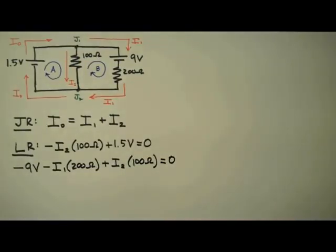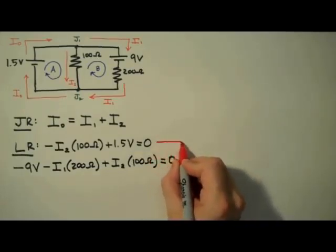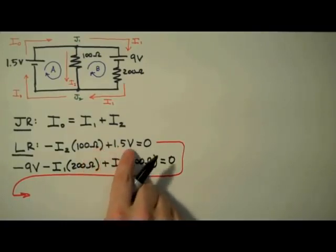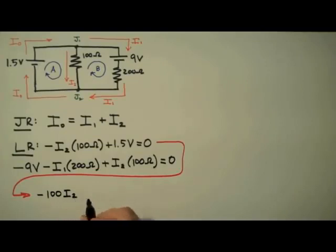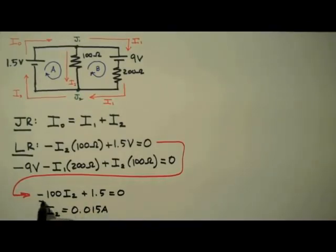At this point, the physics of determining the current in this problem is done. All that's left is some algebra. We have three equations, three unknowns. I'm going to start with the middle equation and solve for I2. I'm going to drop the units — this is pretty much the only time I ever do this, but when using Kirchhoff's rules it makes the equations much easier to handle. I2 is equal to 0.015 amps, or 15 milliamps.